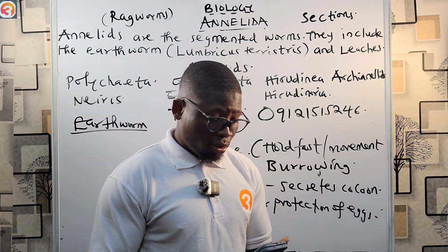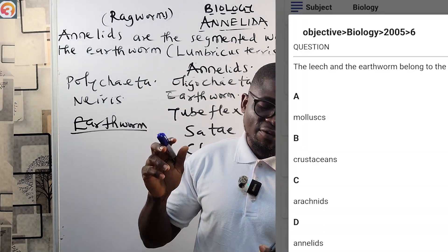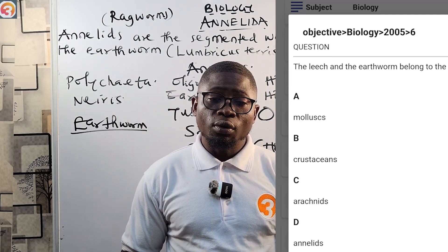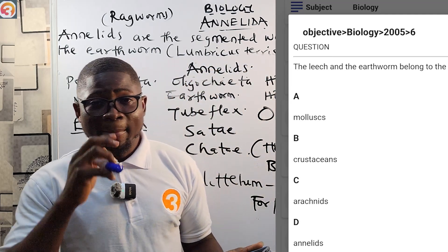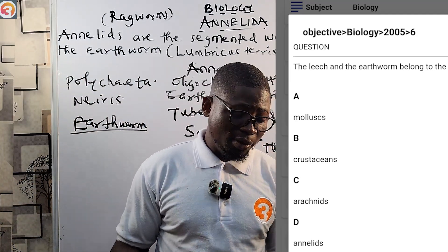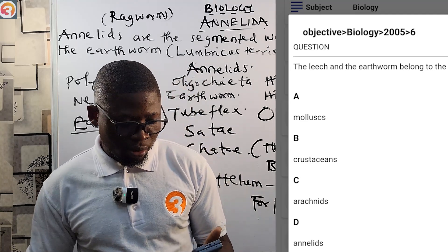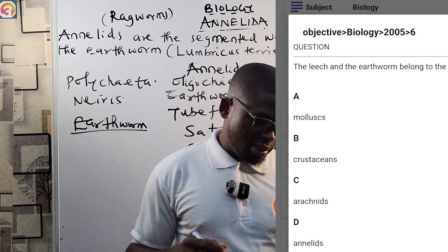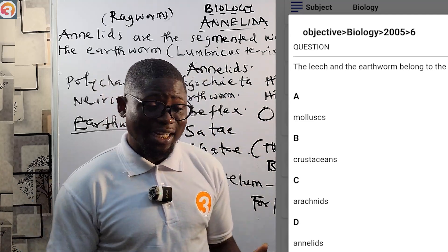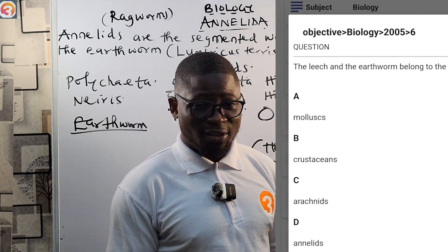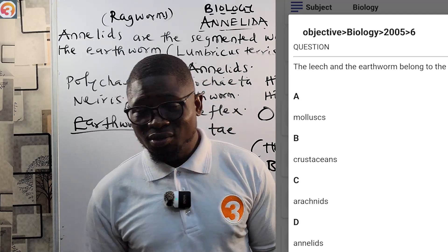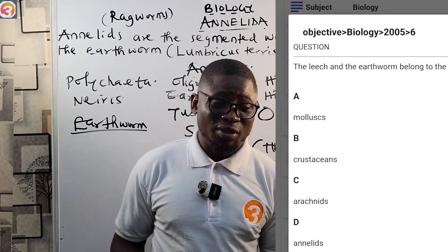Here is a 2005 Jamb question, number 6: 'The leeches and earthworms belong to which phylum of the animal kingdom?' Options: A, Mollusca; B, Crustaceans; C, Arachnids; D, Annelites. The correct answer is D — Annelida. If you do not know it, you simply lose the mark, so take all of this seriously.